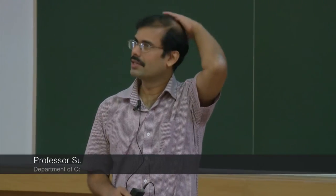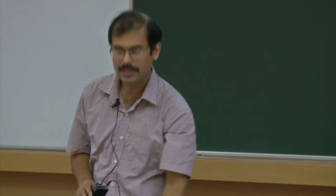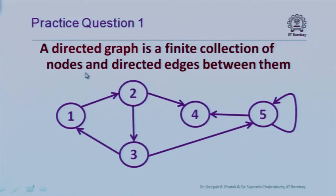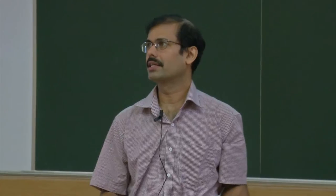Now the practice question. Previously we discussed binary trees; today we look at directed graphs — another important data structure. A directed graph is a collection of nodes with directed edges between them. Each edge has a tail and a head, going from one node to another. Nodes can have only outgoing edges, only incoming edges, neither, or both. The number of incoming and outgoing edges per node is not fixed.